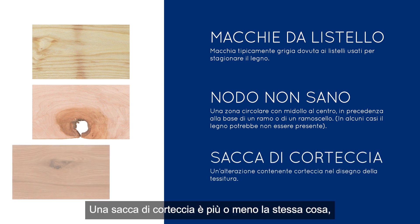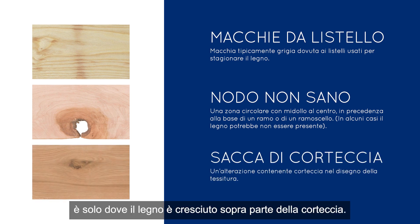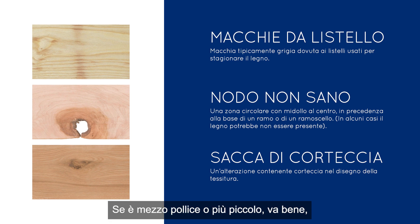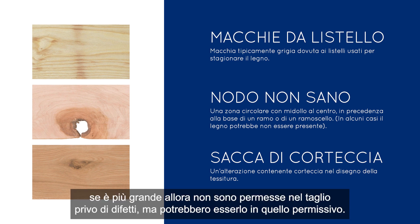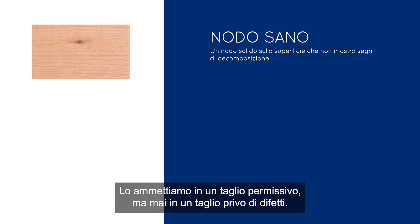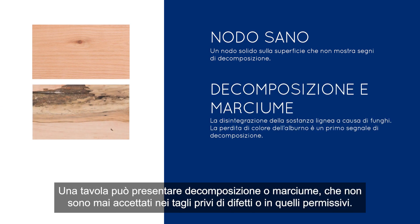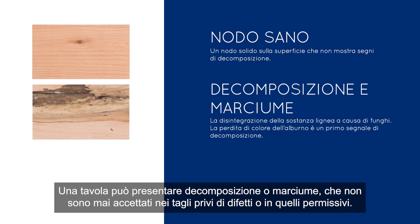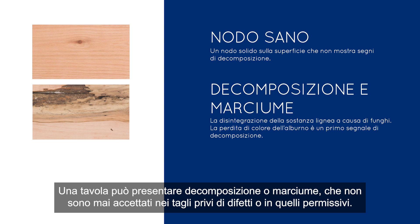Bark pocket is pretty much the same — it's where the wood grew over some of the bark. If it's a half inch or smaller it's okay; if it's over that, it's not. These are not allowed in a clear but could be in a sound. A sound knot — simply a knot that's solid — we allow in a sound cutting but never a clear cutting. Decay or rot could be on the board but is never allowed in a clear or sound cutting; we can measure around it to get our grade.